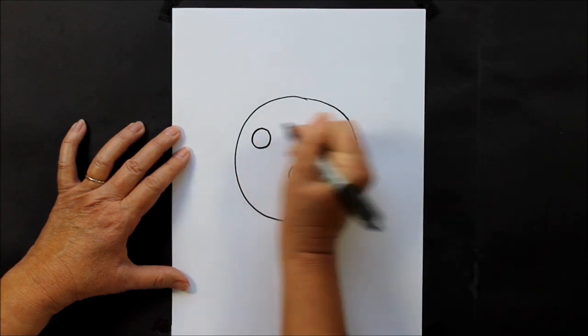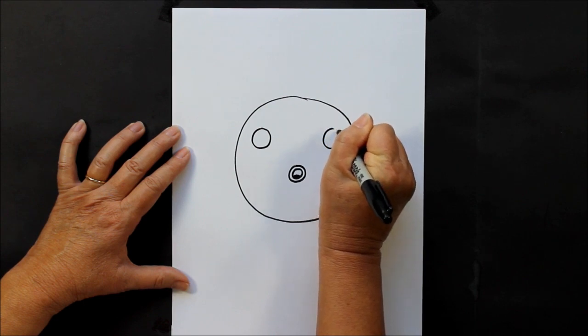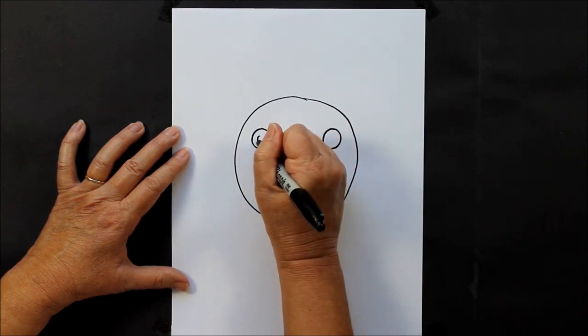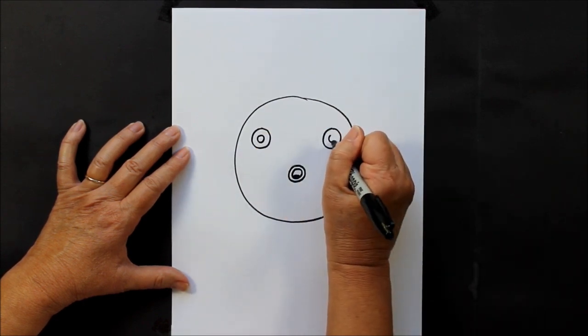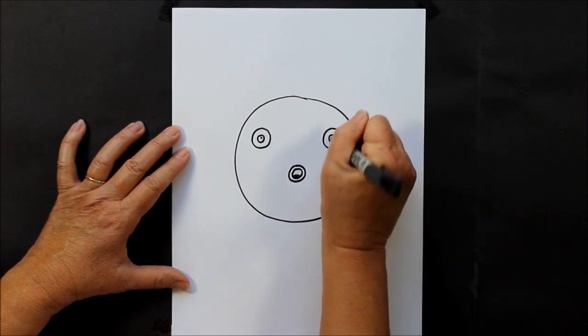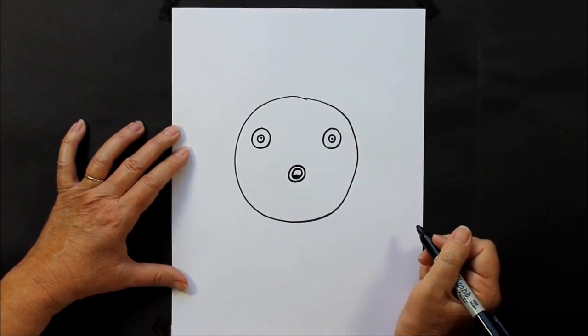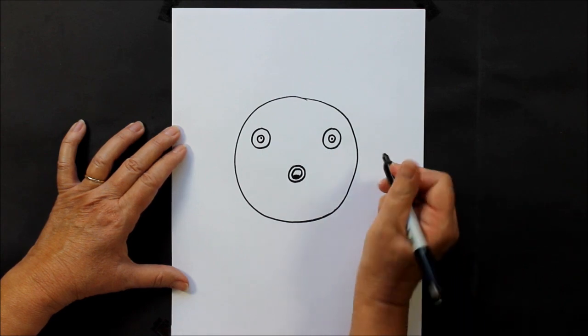So we have big circles, and then we have smaller circles, and then a dot right in the middle.